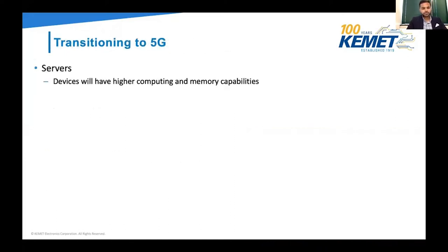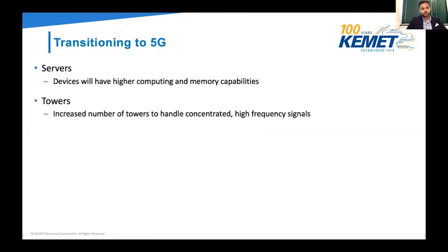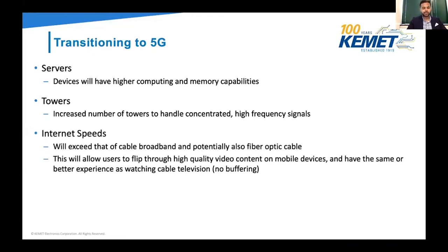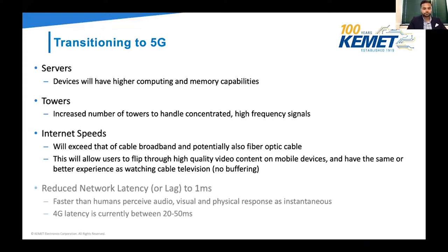Just to summarize: transitioning to 5G means devices will have higher computing and memory capabilities, an increased number of towers to handle high frequency signals, and internet speeds will be super fast — exceeding cable broadband and fiber optic cables. This means you can flip through videos and high quality content pretty easily, and of course there will be reduced network latency.